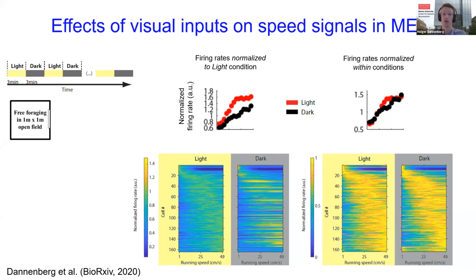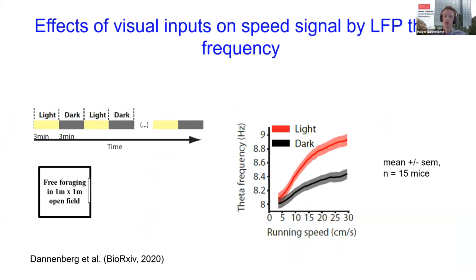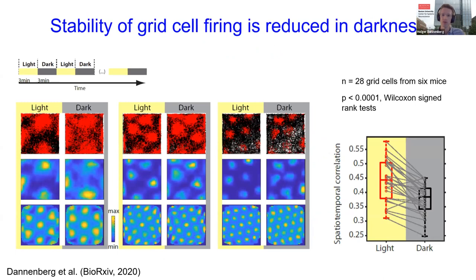We next examined if the proposed oscillatory speed signal by local field potential theta is changed during darkness. We found that the slope in the theta frequency versus running speed relationship was reduced in darkness. Previous data have shown that visual inputs sharpen the grid cell metric, and we found that the spatial stability of grid cell firing was indeed reduced in darkness, but the spacing of grid fields was largely preserved.